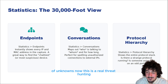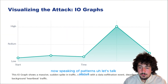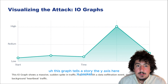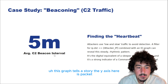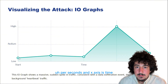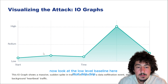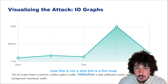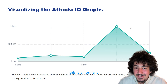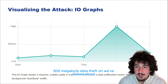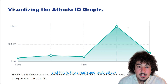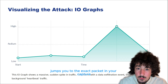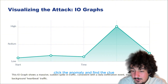Speaking of patterns, let's talk about graphs. The I/O graph is your best friend — this graph tells a story. The y-axis is packets per second and the x-axis is time. Look at the low-level baseline: the drip, drip, drip is your network's normal heartbeat. Then look at the spike — this is not a drip, this is a firehose. This could be visual proof of that 300 megabyte data theft we talked about. This is the smash and grab attack. And the best part: you can click anywhere on this graph and Wireshark jumps you to the exact packet in your capture. Click the anomaly and find the clue.